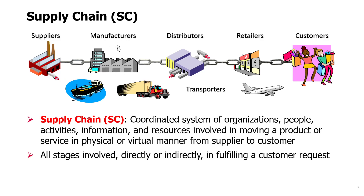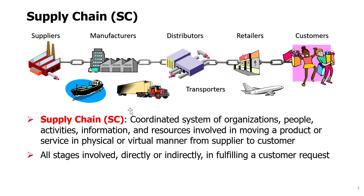If you have a manufacturer that makes a product that eventually a customer wants to buy, the supply chain is what delivers it. The manufacturer is part of that supply chain. There are distributors, there are retailers where the customer finds the product, and there are also transporting companies that deliver the product between the stages of the supply chain. Manufacturers also have their own suppliers, and those suppliers may have their own suppliers, and so on. So these are all the companies involved in the supply chain.